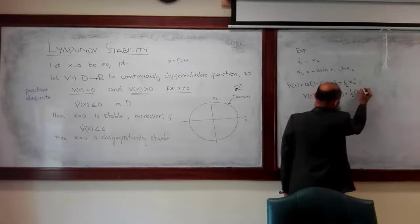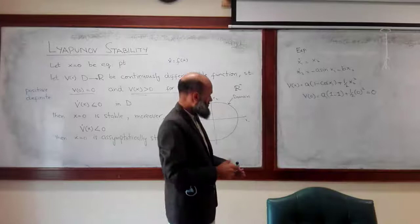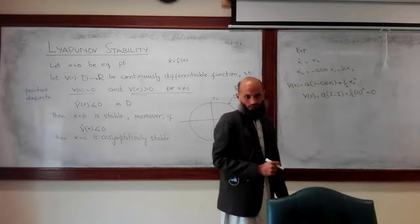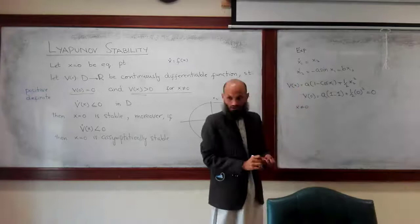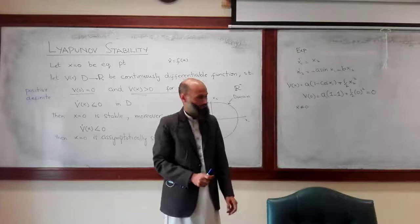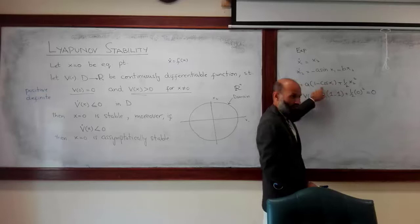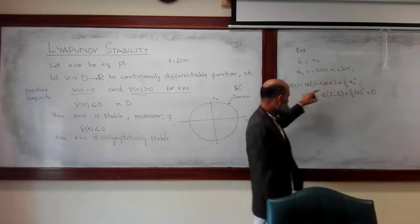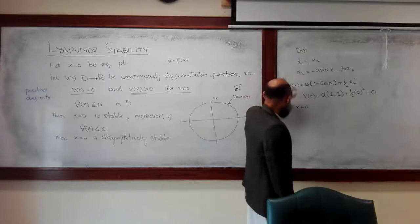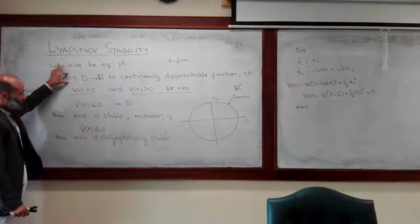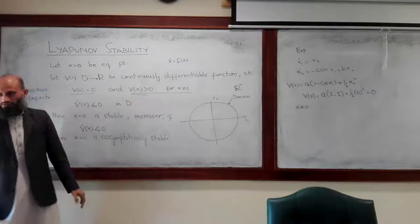a·(1 − cos(0)) = 0 plus 1·0² = 0. So V(0) = 0. Furthermore, for x ≠ 0, this expression will always be positive — this term is always positive, cosine of x1 cannot exceed 1, so this term is also positive. This function will remain positive for all values of x ≠ 0, meaning this function is a positive definite function satisfying both conditions.